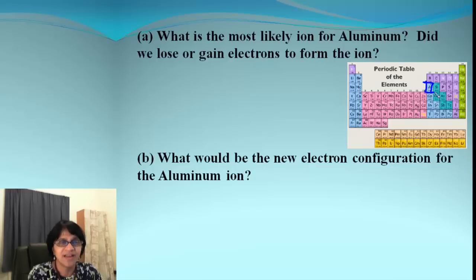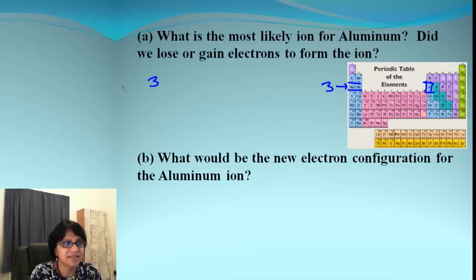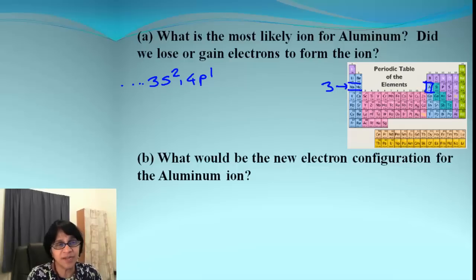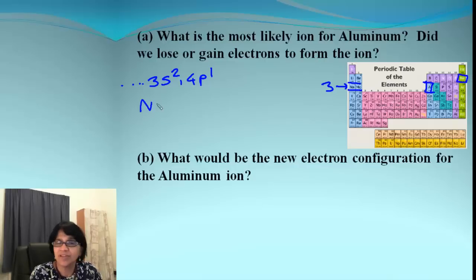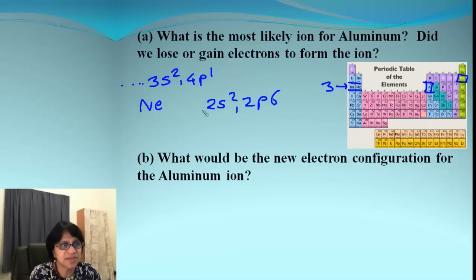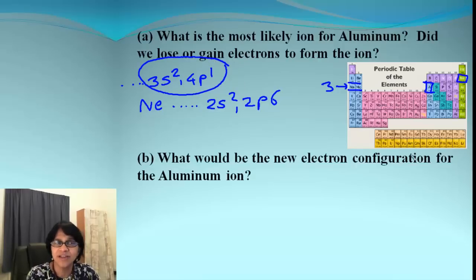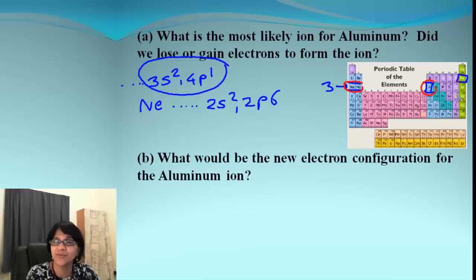So what is the most likely ion formed for aluminum? The last part of the electron configuration comes from row three, giving us 3s² and 3p¹. Now if you look carefully, the noble gas which comes before aluminum is neon. Neon ends with 2s² 2p⁶. The only thing missing to match neon is those 3 electrons — so if aluminum ends up losing those 3 electrons, it's going to be isoelectronic with neon.